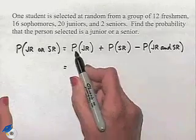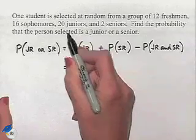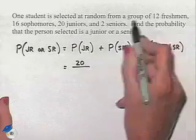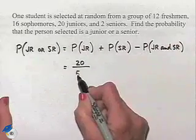So let's continue. The probability of choosing a junior. We have 20 juniors out of our total of 50 when we add all of these values together, 50 different students.